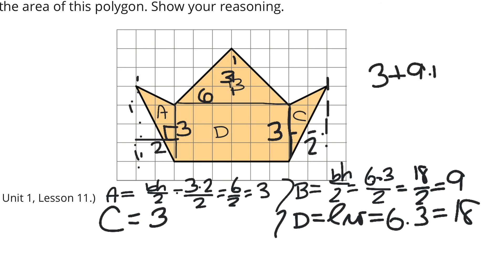And now that I have all four of these, we can add them up. Three plus nine plus three plus 18. A little math thing here. We can do three plus nine is 12, plus three plus 18 is 21. Add those two together. Twelve plus 21 is 33 square units.